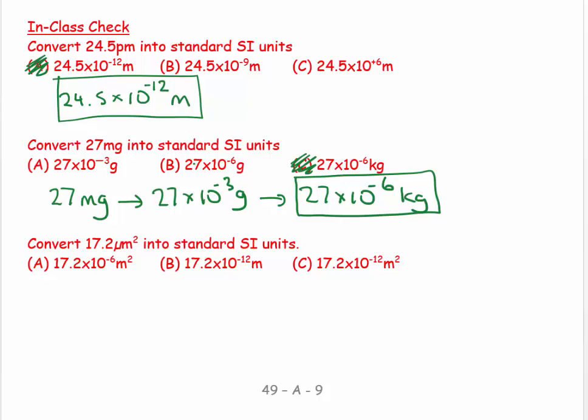And then 17.2 micrometers squared goes to 17.2 times 10 to the minus 6 in one dimension, but this is an area, so it's minus 6 times minus 6, which is minus 12 meters squared. Watch out—make sure you put the square on the meters because that's an area. If you just leave it with meters, then it's a length. Make sure you take the number of dimensions into account.